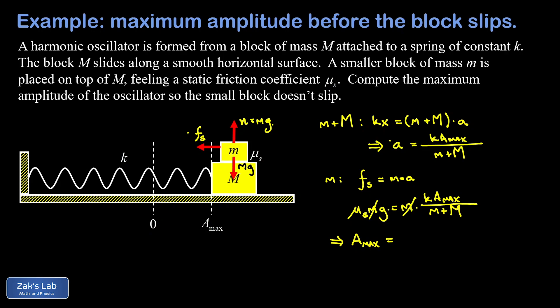We multiply both sides by m plus M and we divide by k, and we find a maximum amplitude equal to mu_s times g times the sum of the two masses divided by the spring constant k. Now for a general solution like this, we're always trying to find ways to check the reasonableness of our answer.